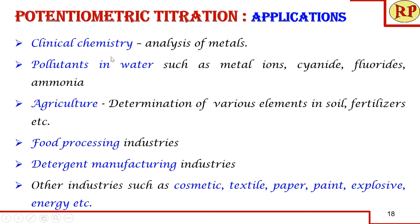Applications include clinical chemistry, analysis of metals and pollutants in water such as metals, cyanide, fluorides, and ammonia; agriculture for analyzing elements in soil and fertilizers; and use in food processing, detergent manufacturing, cosmetics, textiles, paper, paint, explosives, and energy industries. Potentiometric titration is a very versatile method applicable across many industries. That concludes this session — subscribe for more informative videos, drop your comments, and tap the like button if you liked the video. Thank you.